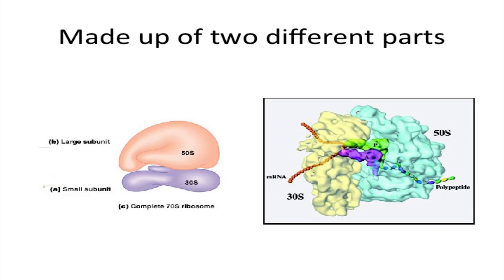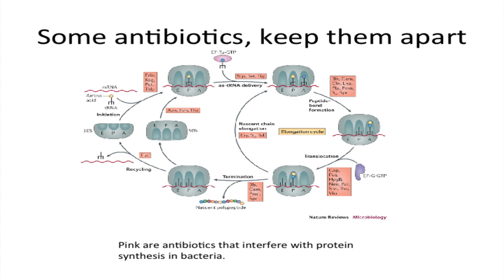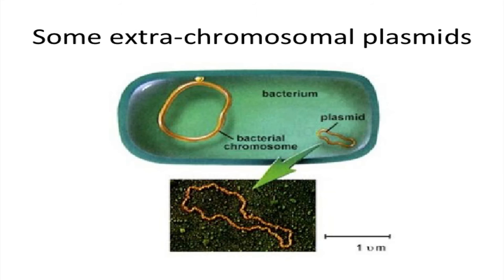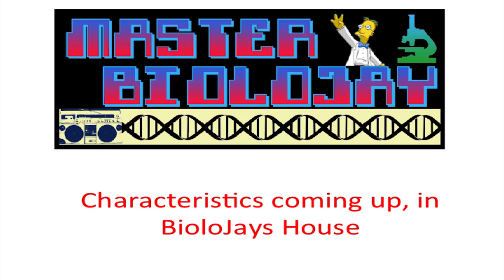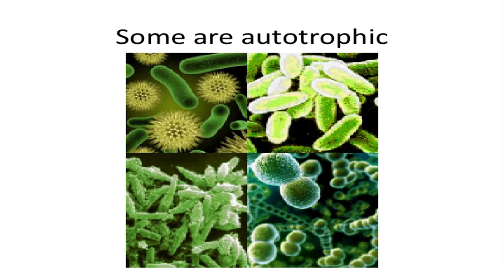Made up of two different parts — some antibiotics keep them apart. Some extra chromosomal plasmids carry resistance for the antibiotics.